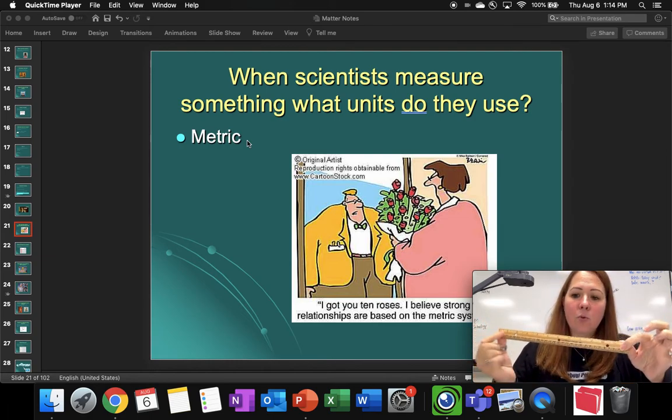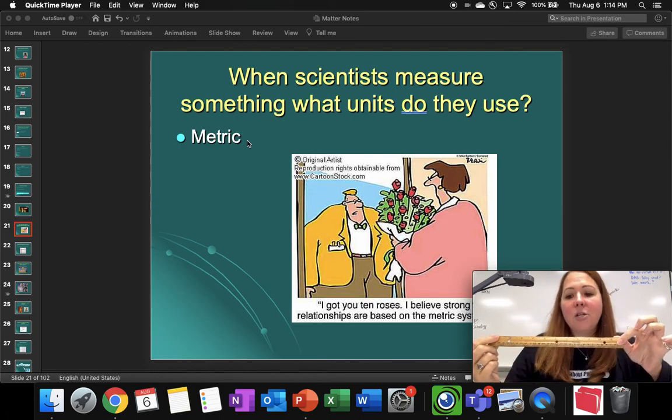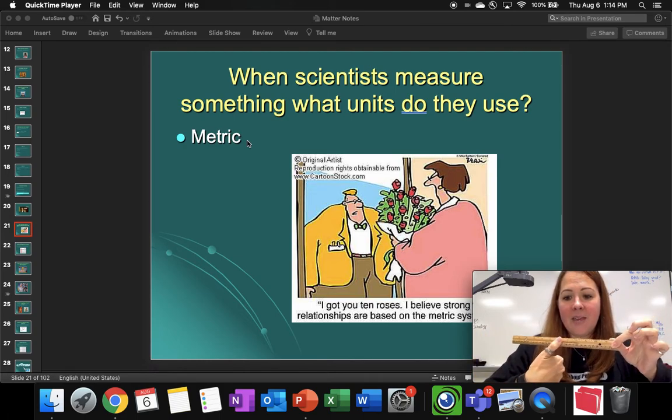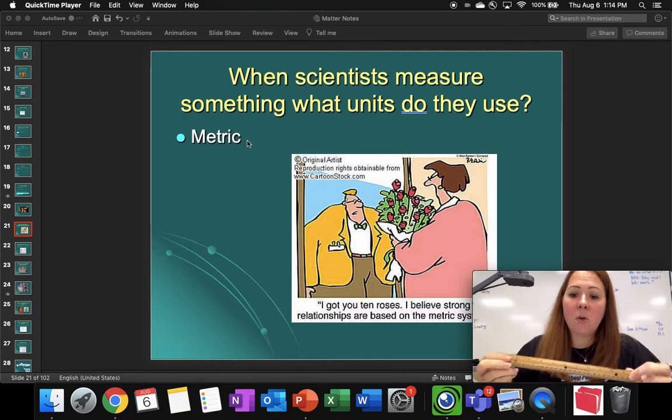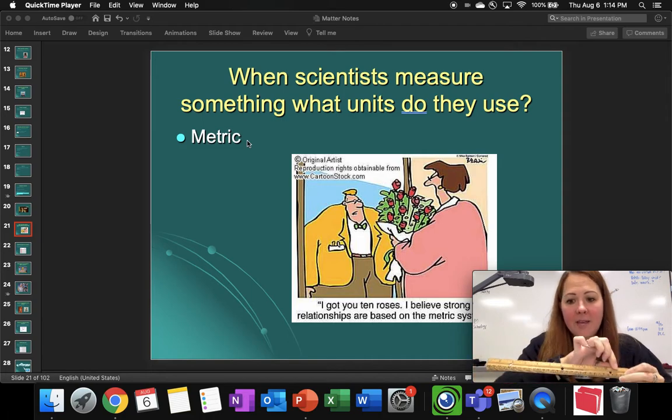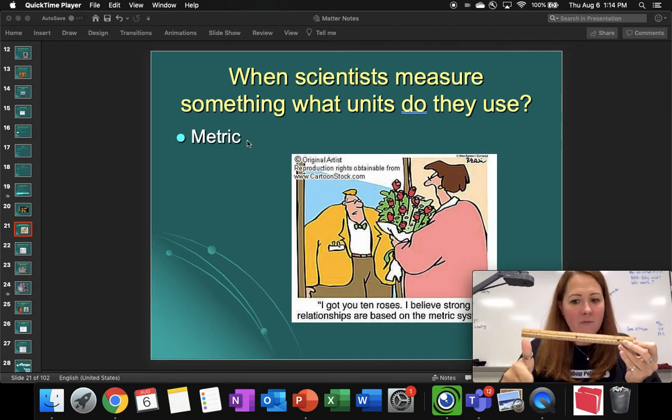Inside of the ruler, we have inches. Inches was actually the width of the king's thumb. So we would take whatever width that was. It might have been bigger, it might have been smaller. So we didn't always have 12 inches in one foot, depending on the length of the foot and the width of the thumb.